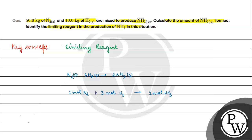Mass of nitrogen kitna diya? Fifty kilos. Agar moles nikalein — moles of nitrogen. Fifty kg ko gram mein kare toh kya jaega: fifty into thousand. Fifty thousand divided by twenty-eight gram per mole. Yeh kitna aajaega hamare paas? One thousand seven hundred eighty-six moles.